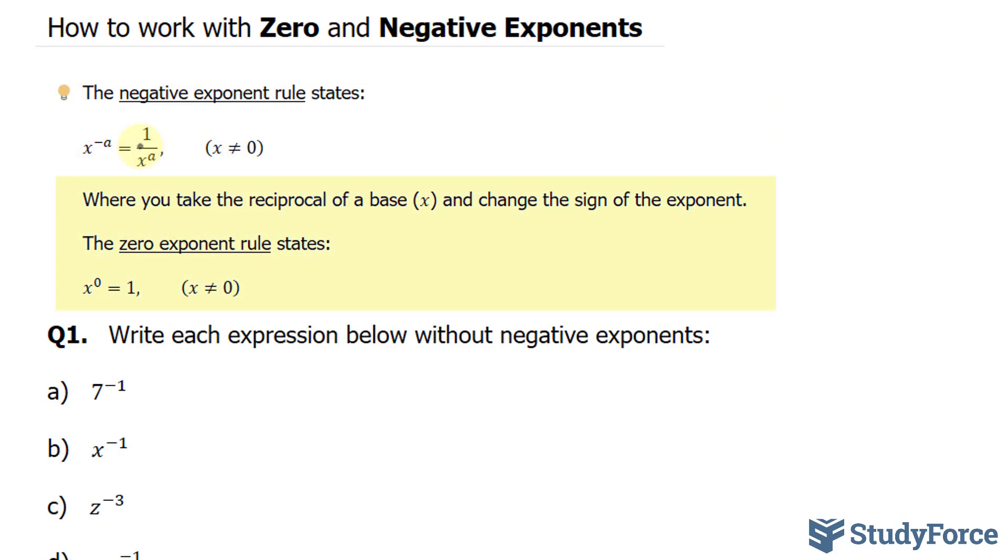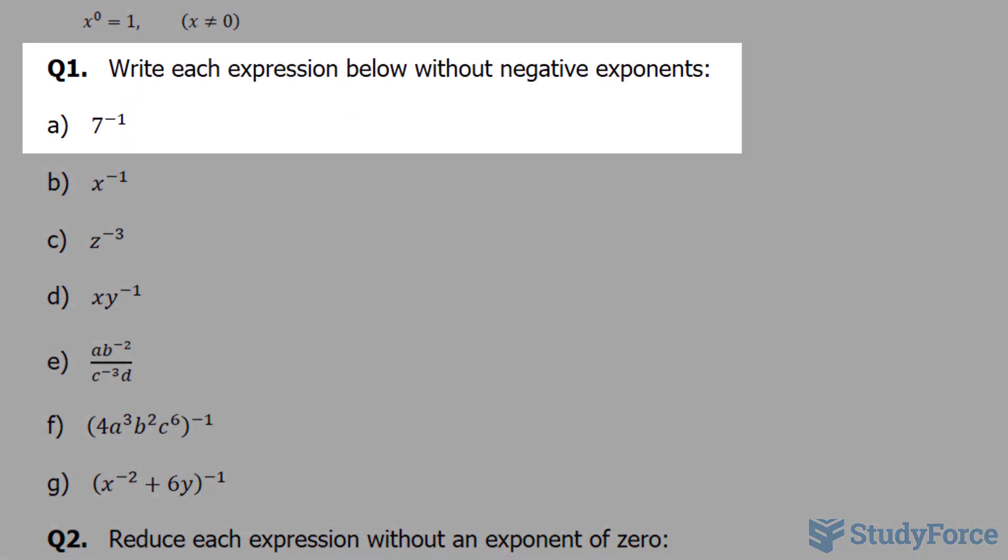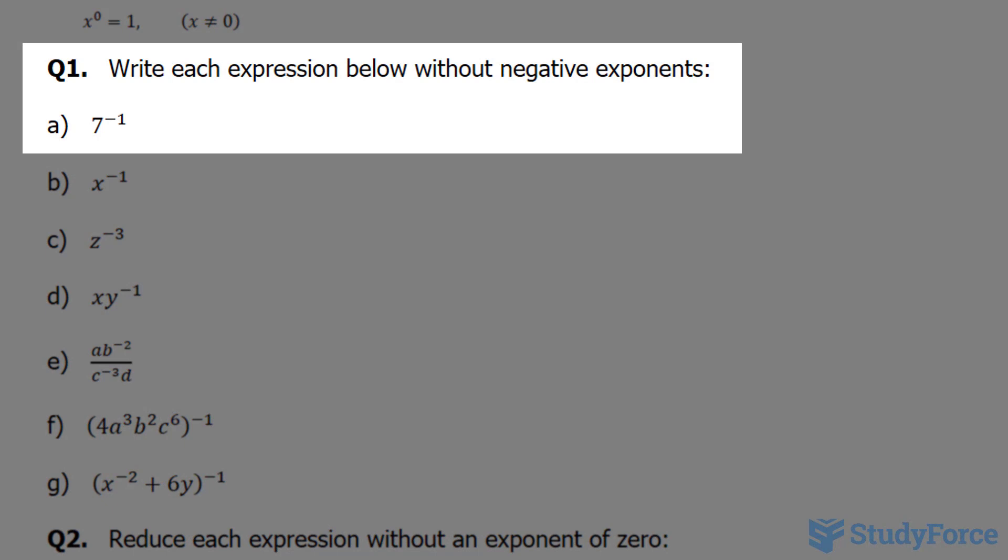The zero exponent rule is even easier. If you have a base raised to the power of zero, the answer is automatically 1. That being said, let's start with question 1. Write each expression below without negative exponents.